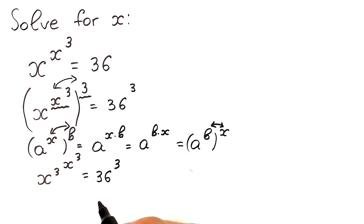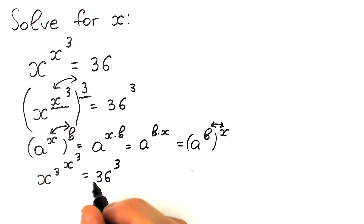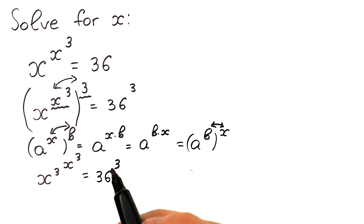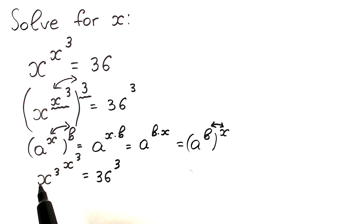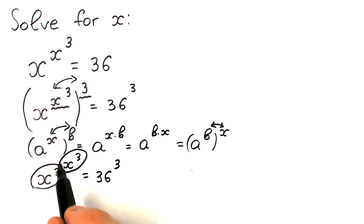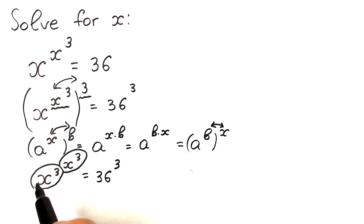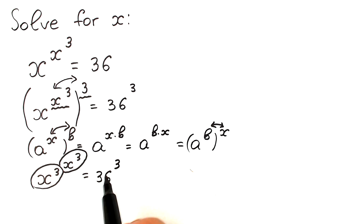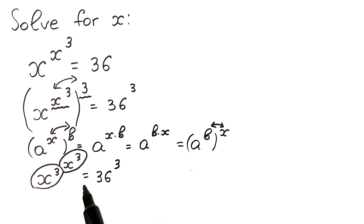What we get as a result: we have x to the power 3, raised to the power x to the power 3, which is equal to 36 to the power 3. On the left hand side we now have the same base and same exponent — x cubed appears as both the base and the exponent. But the right hand side is not in that form yet, so let's simplify 36 to the power 3.